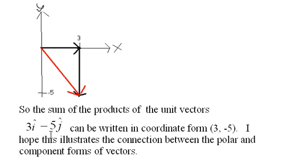When you see a vector written in this form as the sum of products of the unit vectors, you can just think of the component form (3, -5) on the Cartesian coordinate system.